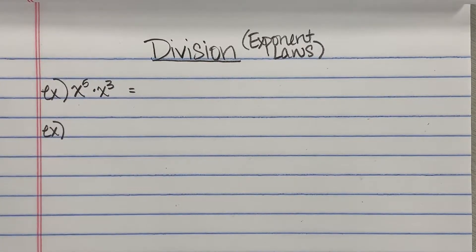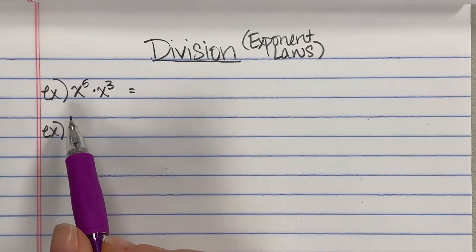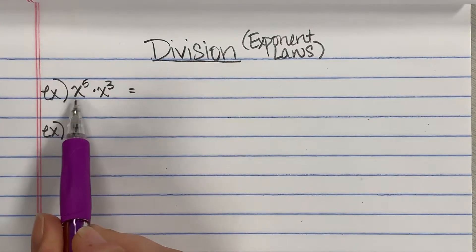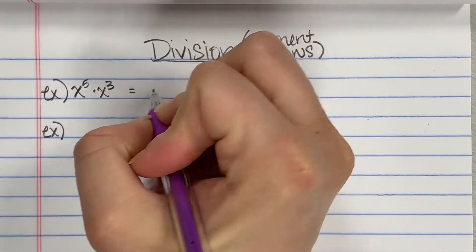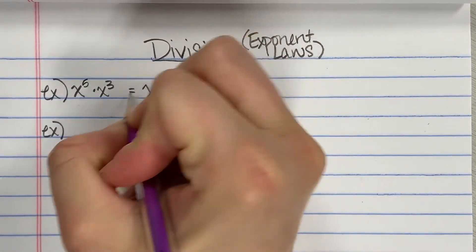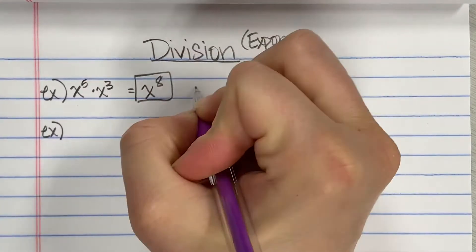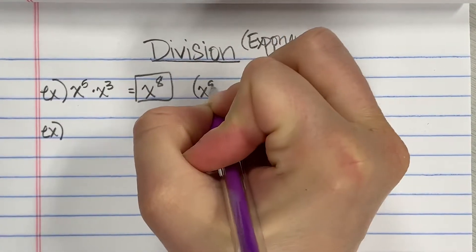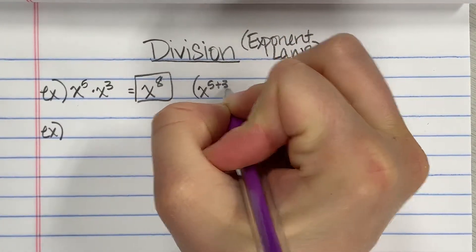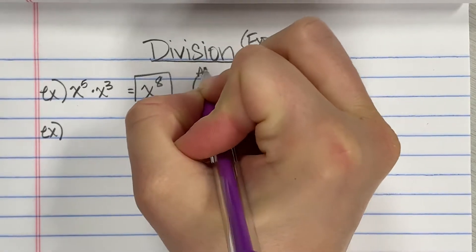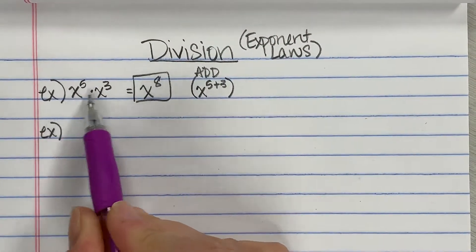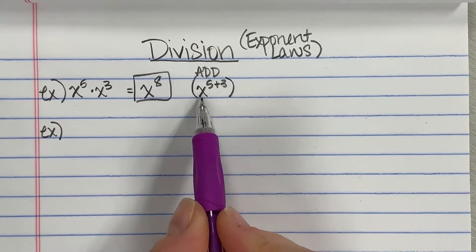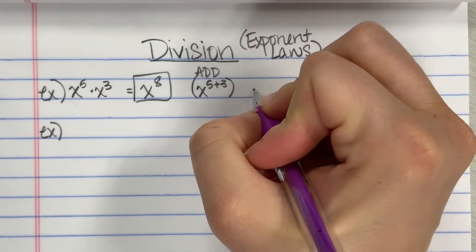Let's move on to division for exponent laws. Just to remind you of what we've already done: when I have x to the fifth times x to the third, we discussed that that is x to the eighth. You can use the rule we learned where when it's a repeated base, you add them together. So when it was multiplication, we added them together.